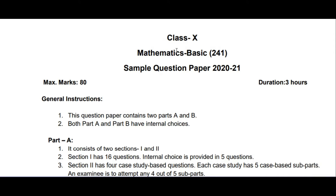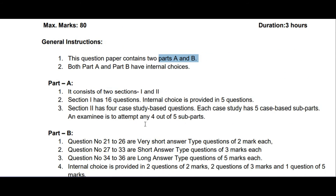This time there are a lot of changes in the question paper pattern. This question paper contains two parts — Part A and Part B. Last time there were four sections: A, B, C, and D. Both Part A and Part B now have internal choice.